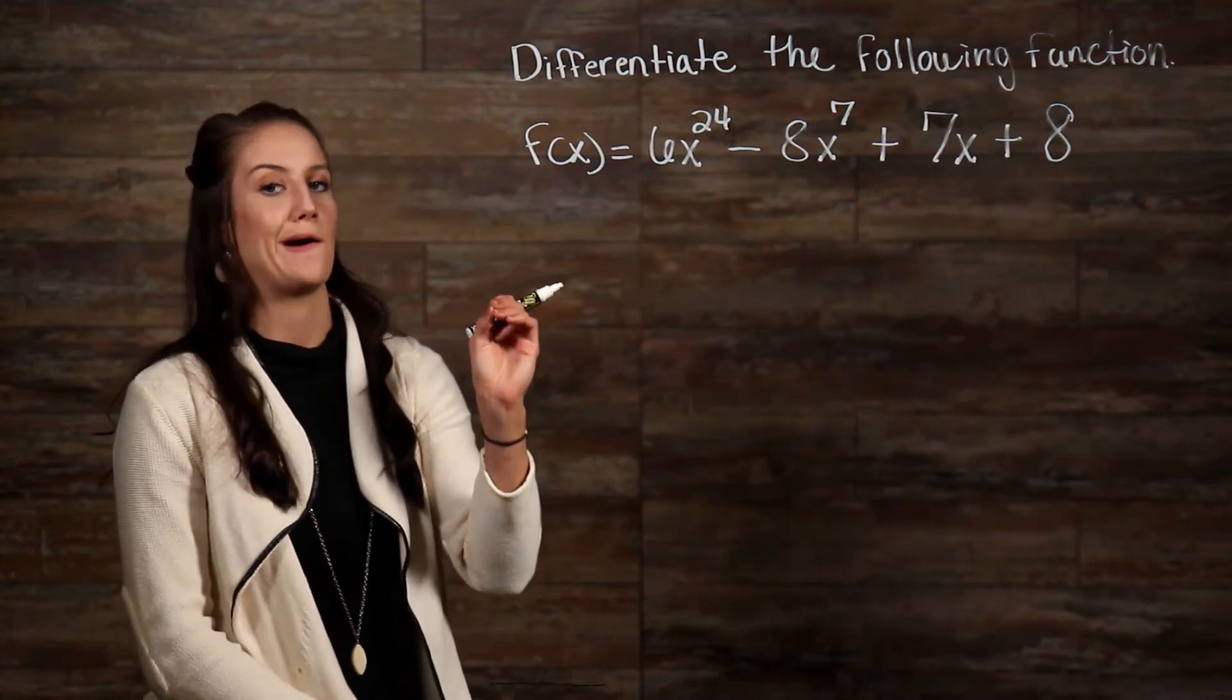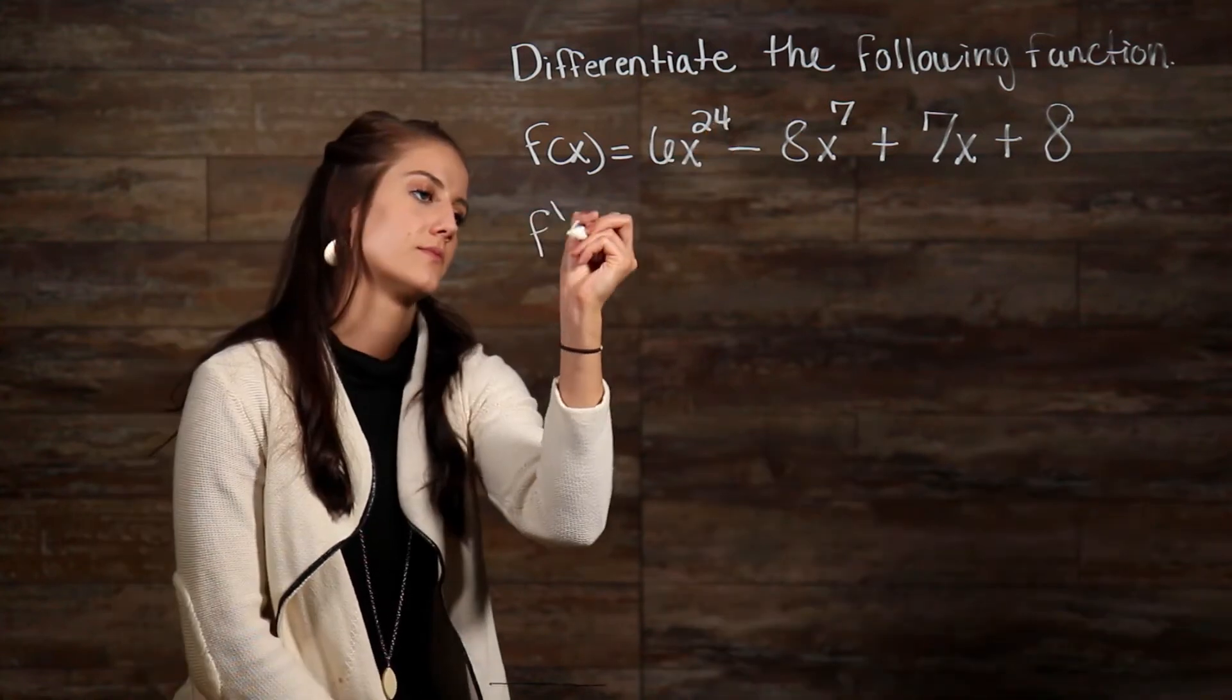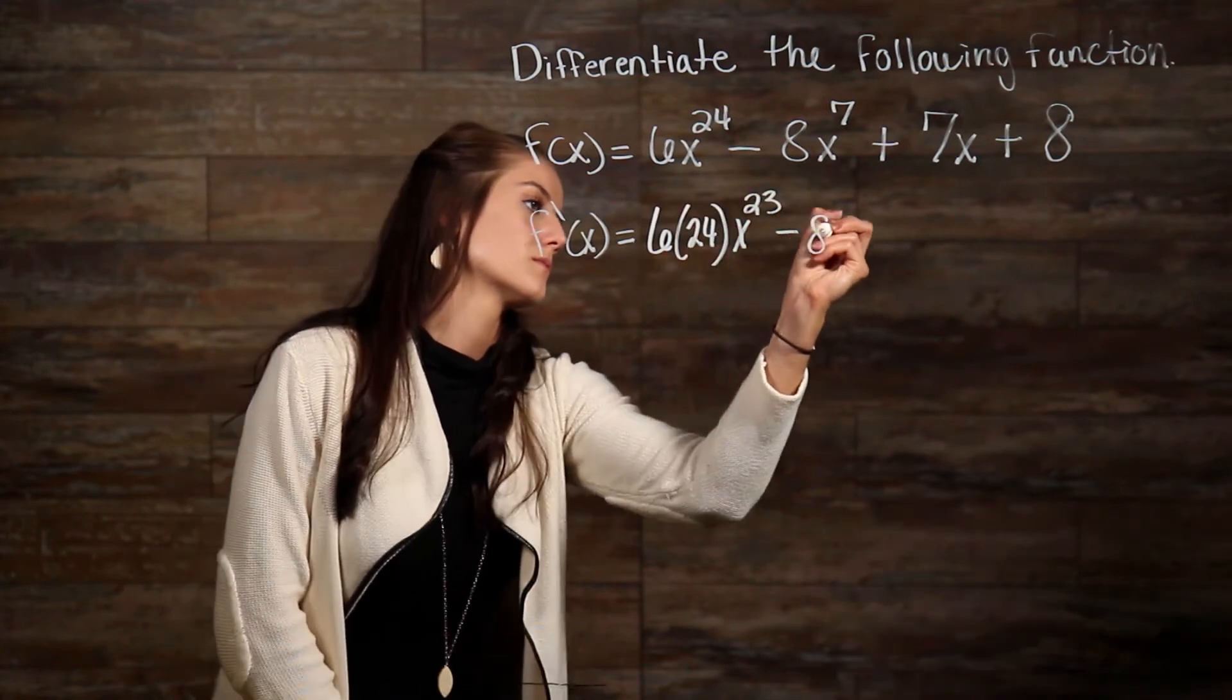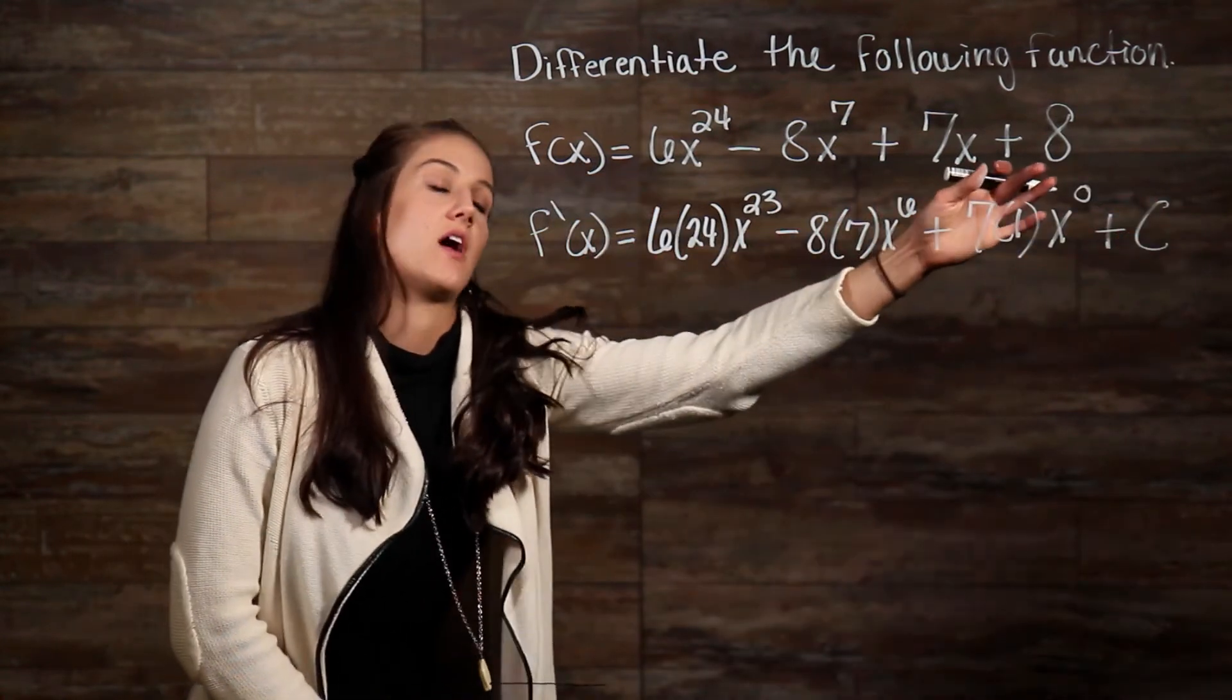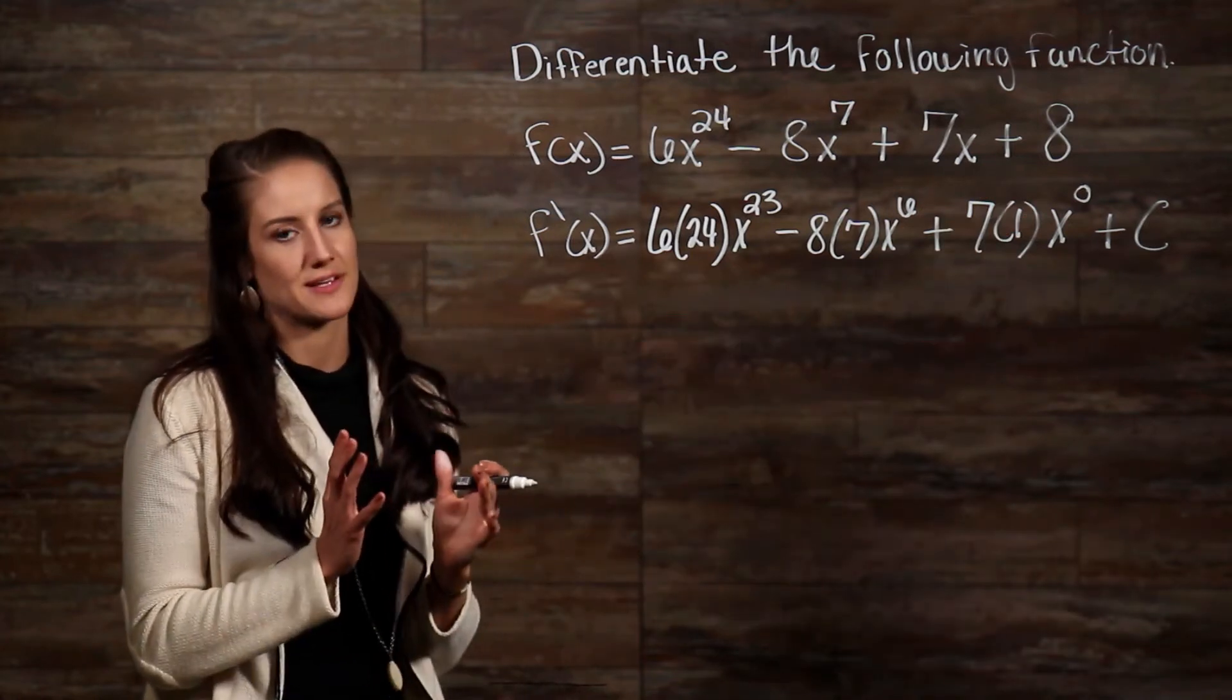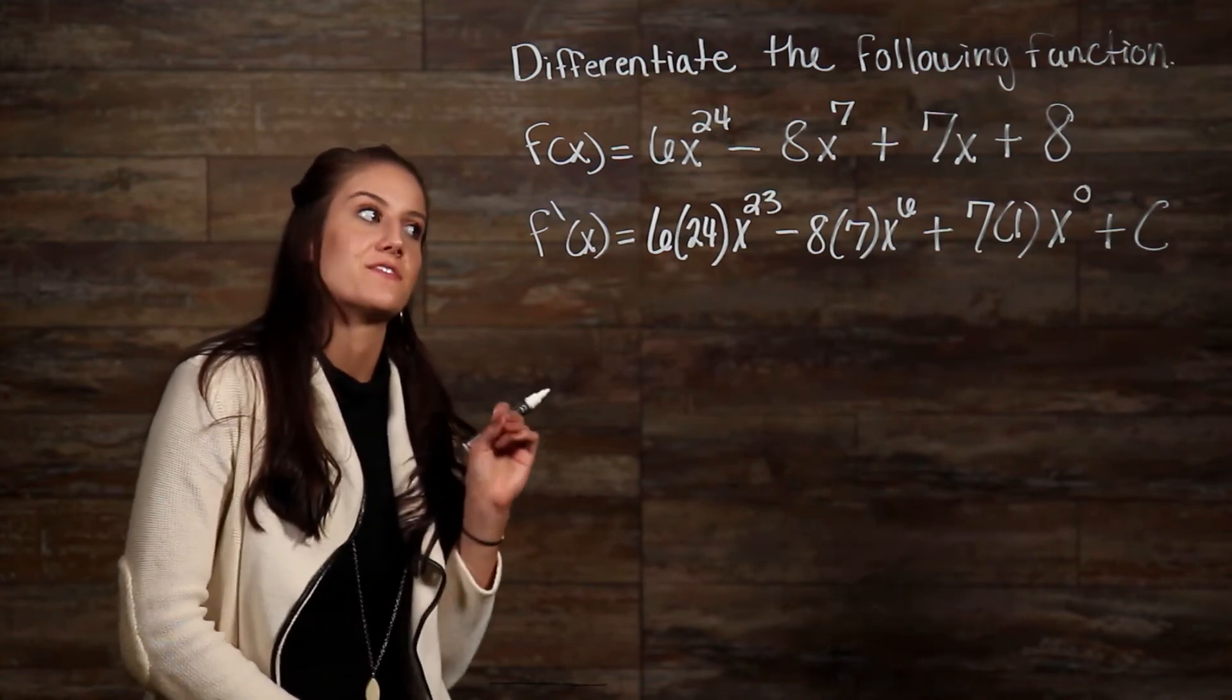So, when we apply our power rule, we'll bring down this exponent to multiply, then subtract one from our exponent. Any time you take the derivative of a constant, you'll always replace it with c. And this will start to make sense when we start taking antiderivatives, which is another video. Now, we can go ahead and simplify this even further.